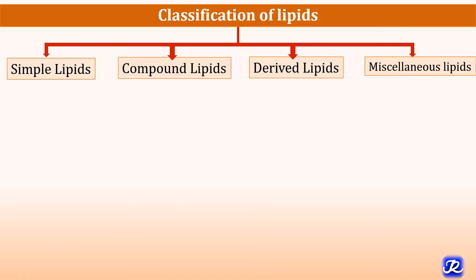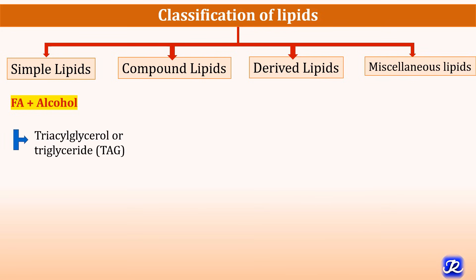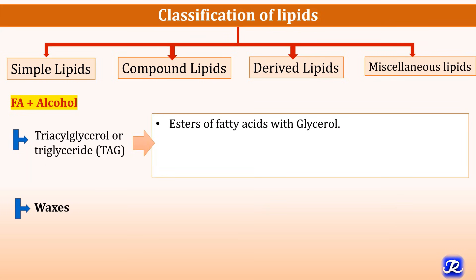Simple lipids are esters of fatty acids with various alcohols. Examples include triacylglycerol or triglyceride, also called TAG, and waxes. TAGs are esters of fatty acids with glycerol, and they are uncharged, which is why they are also called neutral fat. The fat we mostly eat is triacylglycerol, and fat deposited in our body as a fuel source is also triacylglycerol.